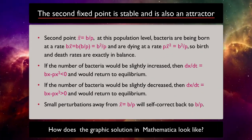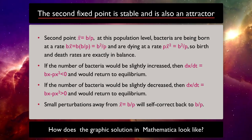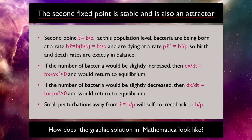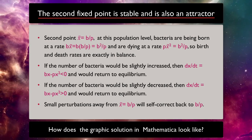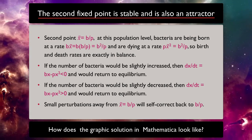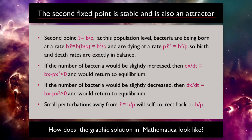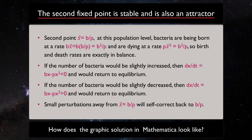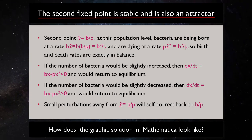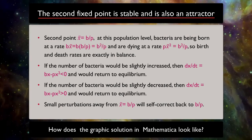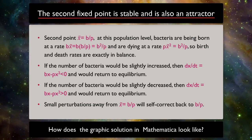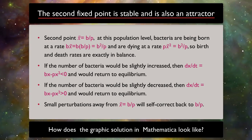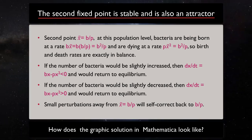Now let's look at the second point x2 equals b over p and see what does it mean and test its stability. At this population level, bacteria are being born at a rate b squared over p and are dying at the same rate. So birth and death rates are exactly in balance. If the number of bacteria would be slightly increased, then dx over dt is negative and would return to equilibrium. If the number of bacteria would be slightly decreased, then derivative dx over dt is positive and would return to steady state. So a small perturbation away from x2 will self-correct back to b over p. Therefore, second fixed point is stable.